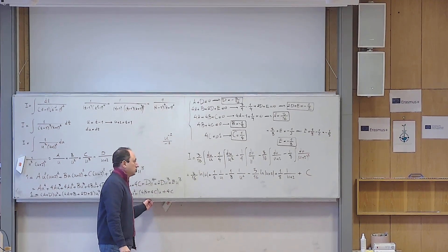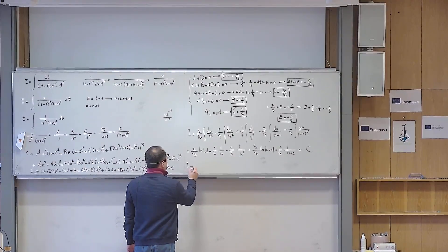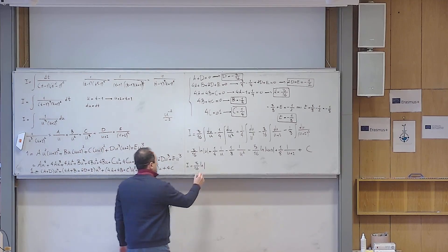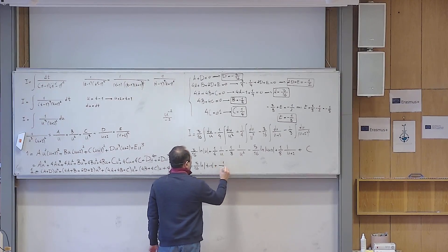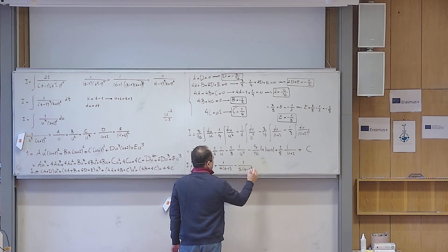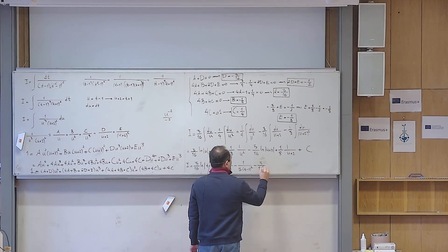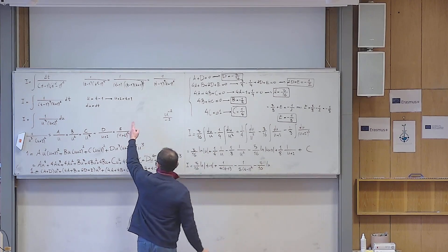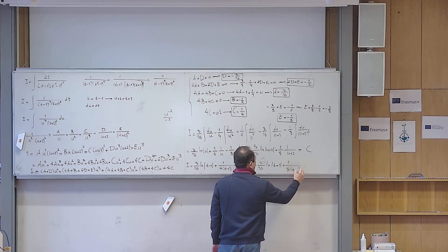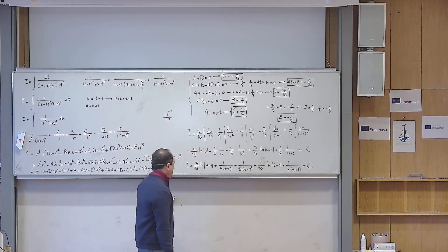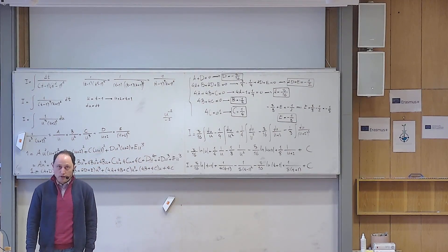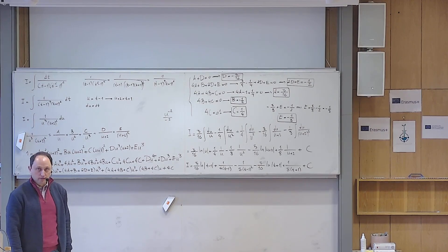Switching back to the original variable t using u = t − 1 and u + 2 = t + 1, the final answer is: (3/16) ln|t−1| + 1/(4(t−1)) − 1/(8(t−1)²) − (3/16) ln|t+1| + 1/(8(t+1)) + C. I hope this video was useful. Until the next video, be safe and goodbye.